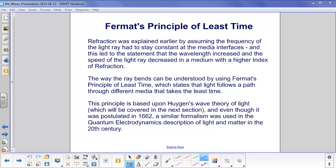Refraction was explained by assuming that the frequency of the light ray as it passed through different media had to stay constant. If it didn't, the waves would build up at the interface and wouldn't go through, and we know that physically doesn't happen. When this does happen, we find that the wavelength of the light increases and the speed of the light ray decreases in a medium with a higher index of refraction.